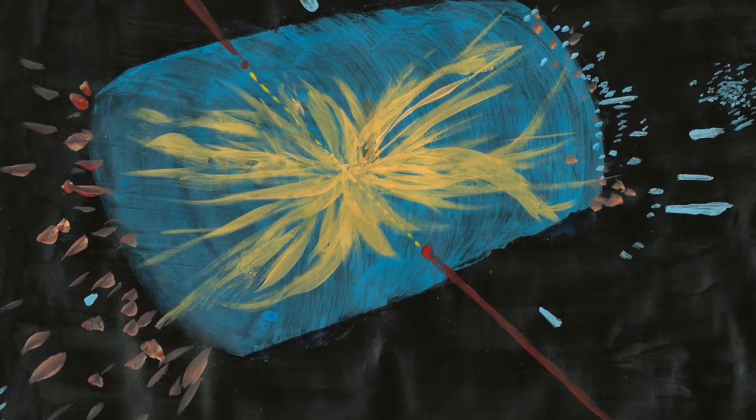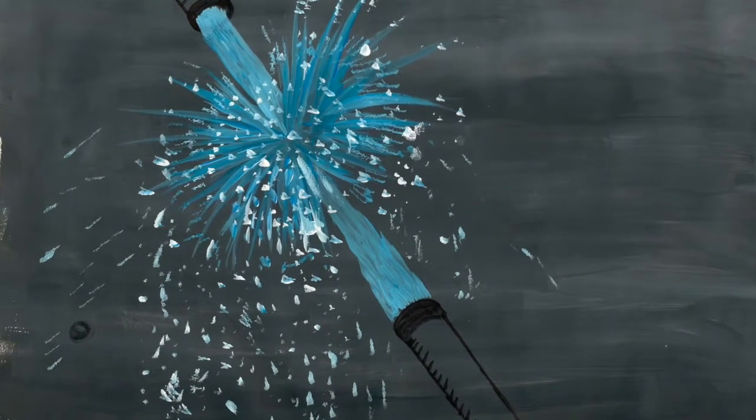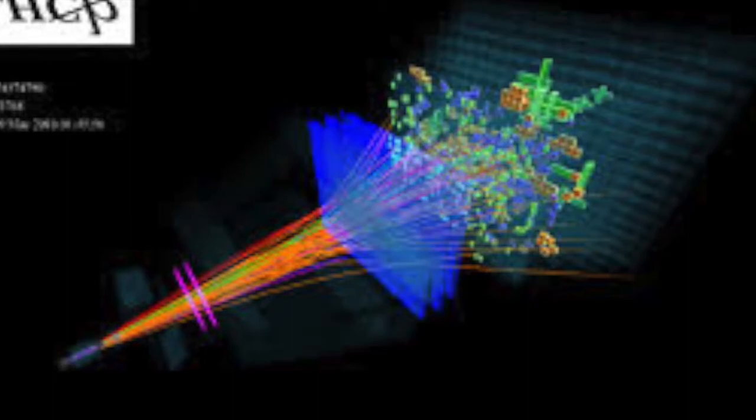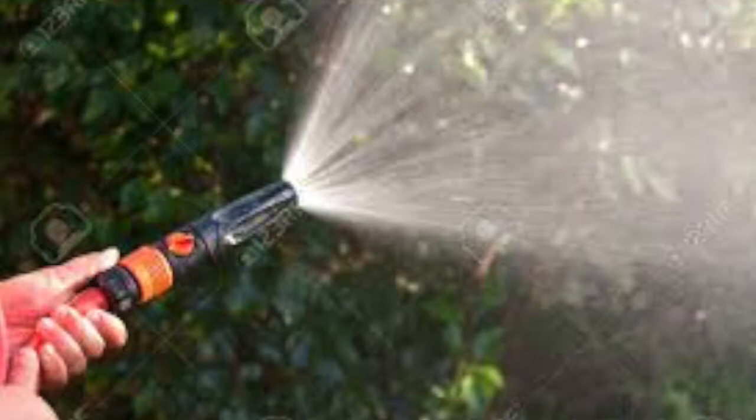CERN's atom smashing experiment can easily be reproduced and observed by running two hoses of water against each other. The two opposing streams of water will cause the water to form into smaller droplets and scatter. But the droplets are still water. The properties of water did not change. There is an attempt to name individual droplets of the same thing as different types of energy. The boson Higgs, the quarks, ups, and downs are just a few of these that fall into this category.